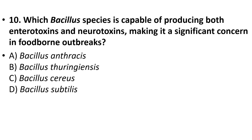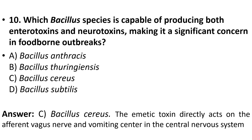Tenth question: Which Bacillus species is capable of producing both enterotoxins and neurotoxins, making it a significant concern in foodborne outbreaks? Options: Bacillus anthracis, Bacillus thuringiensis, Bacillus cereus, Bacillus subtilis. The answer is option C, Bacillus cereus. The emetic toxin directly acts on the afferent vagus nerve and vomiting center in the central nervous system.